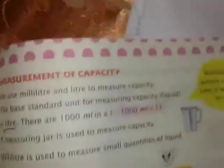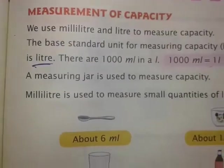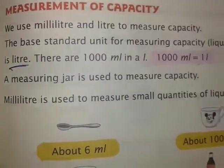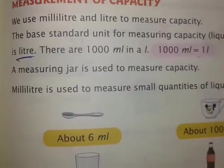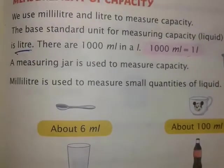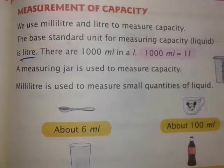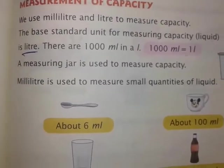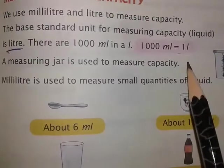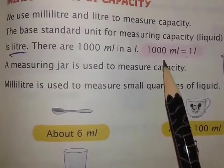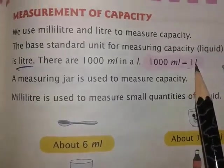Today we will learn about measurement of capacity. Capacity means how much liquid a vessel or object can hold - how much volume of liquid that is called the capacity of the vessel. Capacity is measured in milliliters for smaller amounts, and for larger quantities we use liters. Liter is the standard unit of measuring capacity.